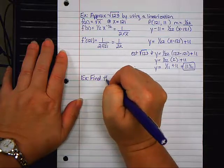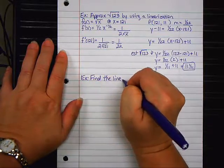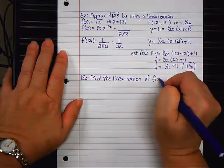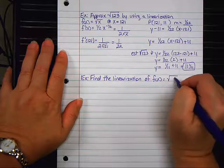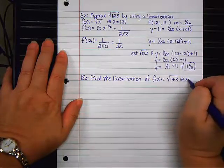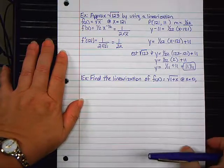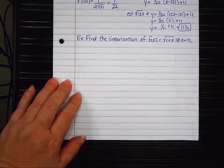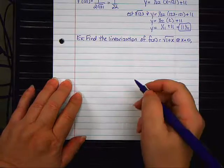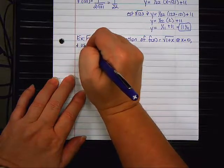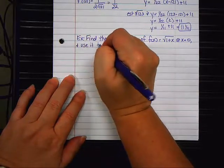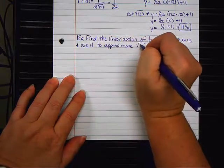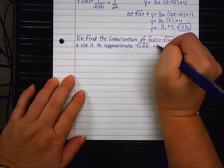Find the linearization of f of x equals the square root of 1 plus x at x equals 0, and use it to approximate the square root of 1.02 without a calculator.